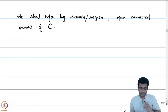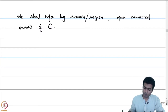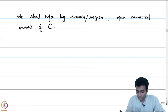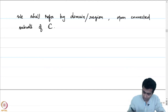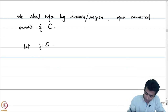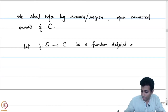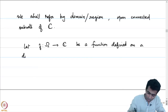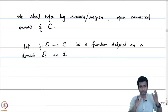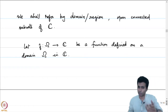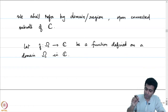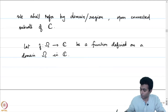Let us now look at a function f from omega into C, where omega is a domain in C. Let f from omega into C be a complex valued function defined on a domain or region omega in C. This means that omega is an open subset of C which is also connected, and f is a function on omega which takes values in the complex plane.